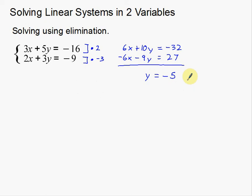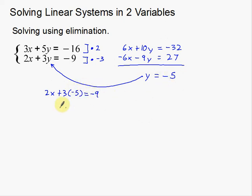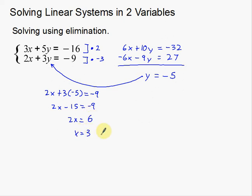So y equals negative 5. Just like last time, since we've solved for one variable, we plug it back into one of the original equations. I'll use the bottom one: 2x plus 3 times negative 5 equals negative 9. That gives 2x minus 15 equals negative 9. Adding 15 to both sides: 2x equals 6. So x equals 3. That gives a solution of 3, negative 5.